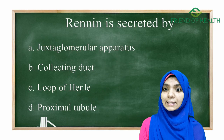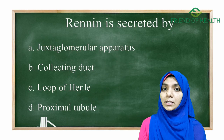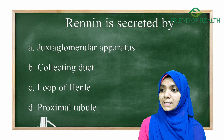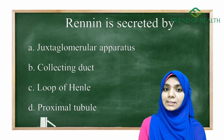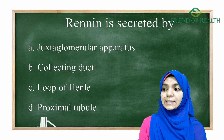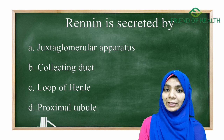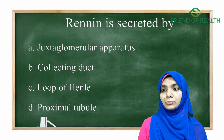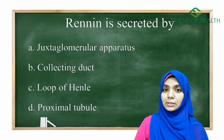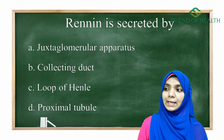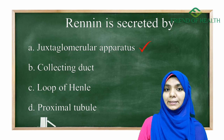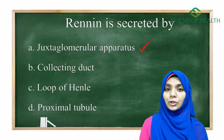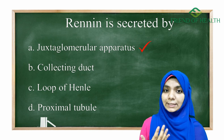The question is: renin is secreted by — options are A: juxtaglomerular apparatus, B: collecting duct, C: loop of Henle, and D: proximal tubule. This question is very simple. As you all know, the answer is the juxtaglomerular apparatus. But let us learn more about it.